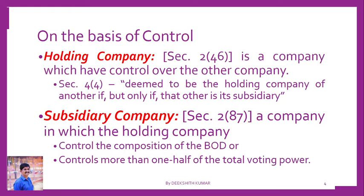Subsidiary company, as per Section 2, subsection 87, means a company in relation to any other company — that is, the holding company — where the holding company controls the composition of the board of directors, or holds more than one half of the total voting power. That company is a subsidiary company and this company is a holding company. The holding company shall not have layers of subsidiaries beyond such numbers as may be prescribed.